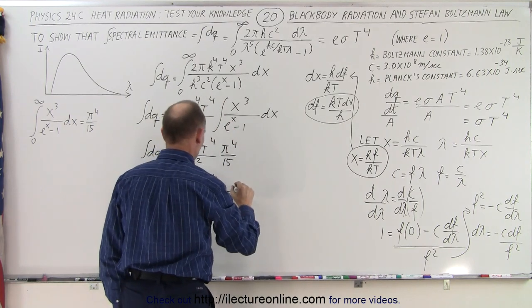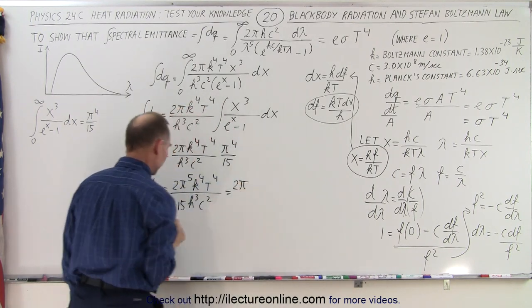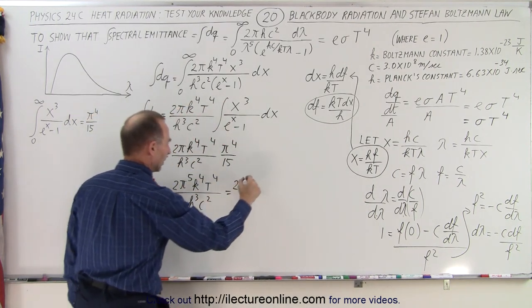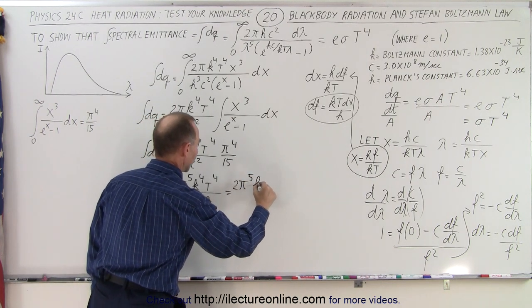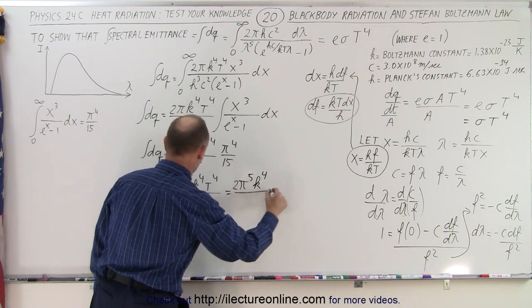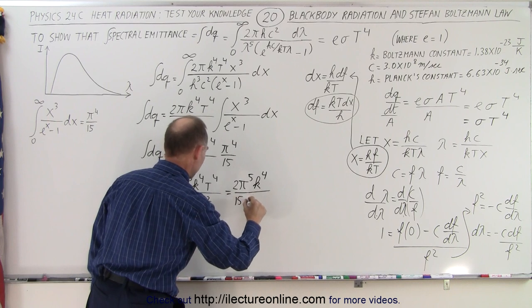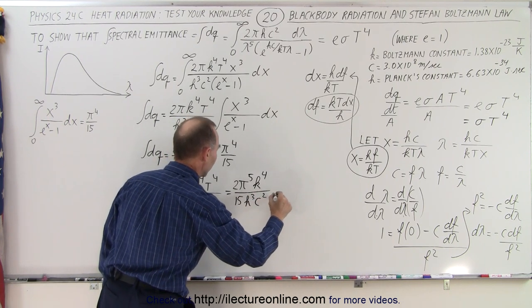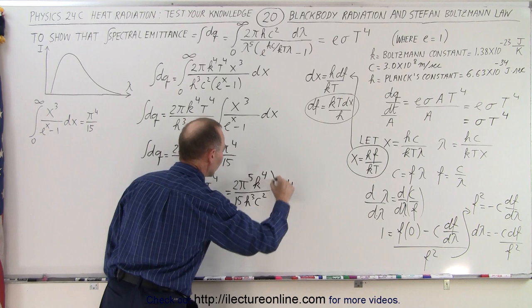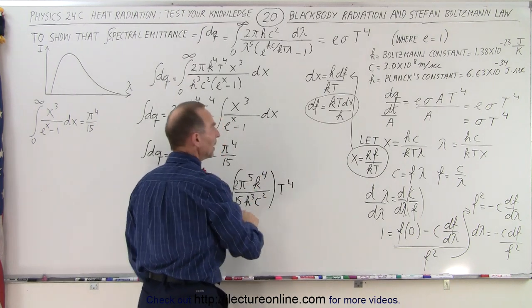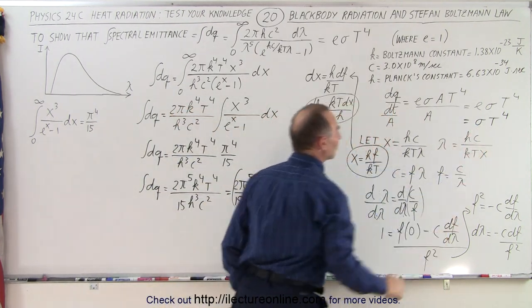So we can say that this is equal to 2π, and let me get out of the way so you can see what I'm doing, to the 5th power, k to the 4th power, divided by 15 h cubed c squared times T to the 4th power. So this should be equal to the Stefan-Boltzmann's constant there.